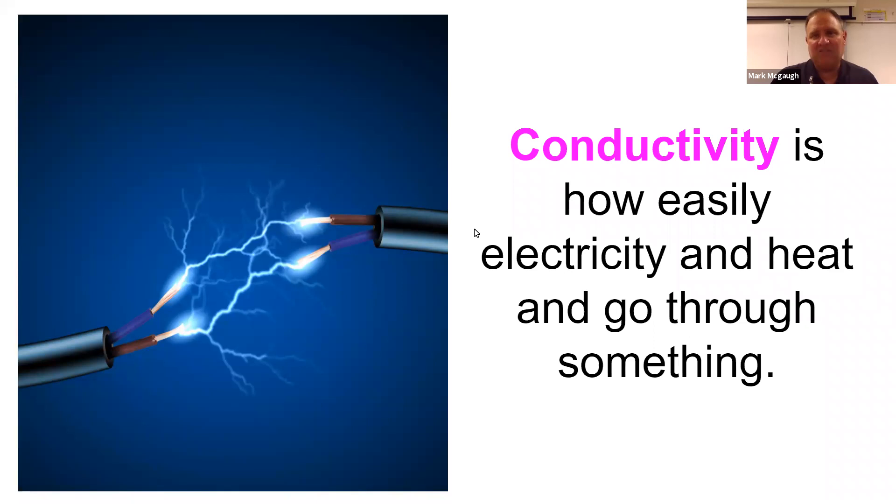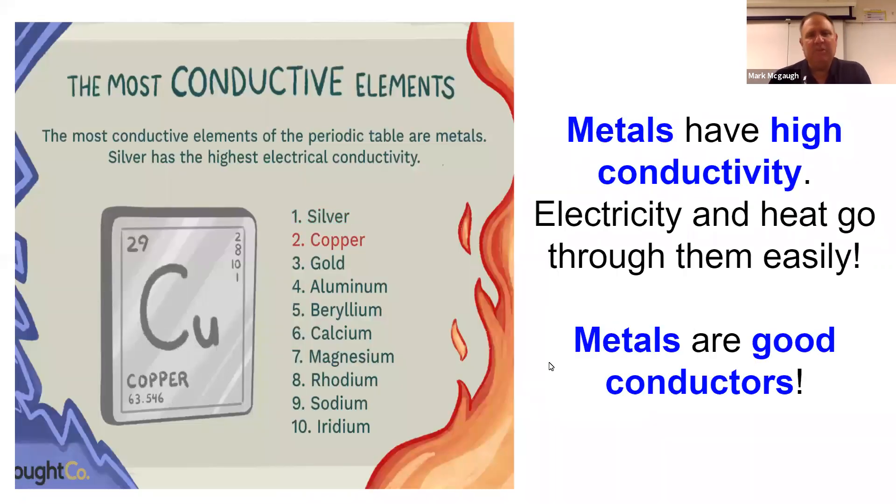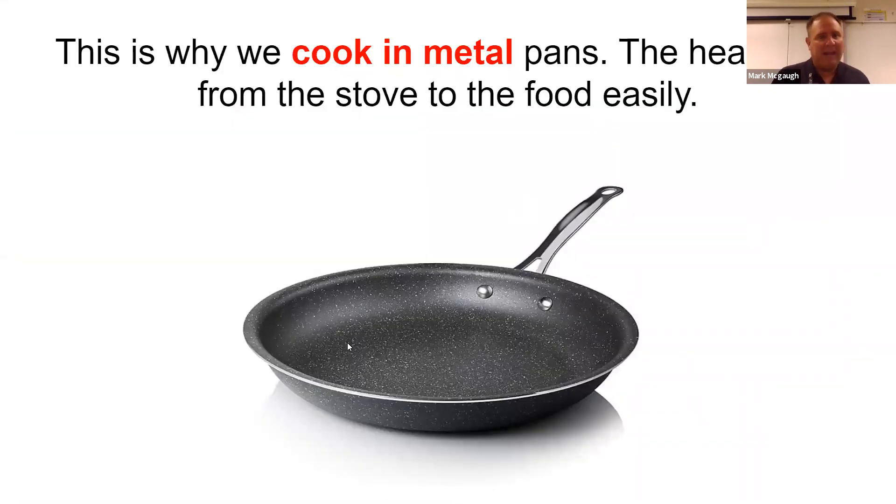Conductivity is things that conduct heat and electricity, things that allow heat and electricity to go through them. You need to know that metals have high conductivity and are good conductors, and that's explained by metallic bonding which we'll talk about in a minute. We cook in metal pans because they let the heat go to the food real fast.